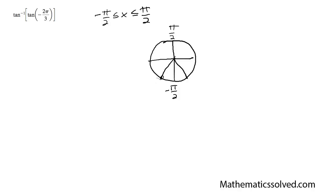As you can see here, negative 2π/3 is equivalent to negative π/3 in terms of tangent, which is the same thing as simply π/3. So if I plug in tangent for that, I get my values out, and plugging into the inverse tangent, I simply end up with π/3. So the answer to this problem is simply π/3.